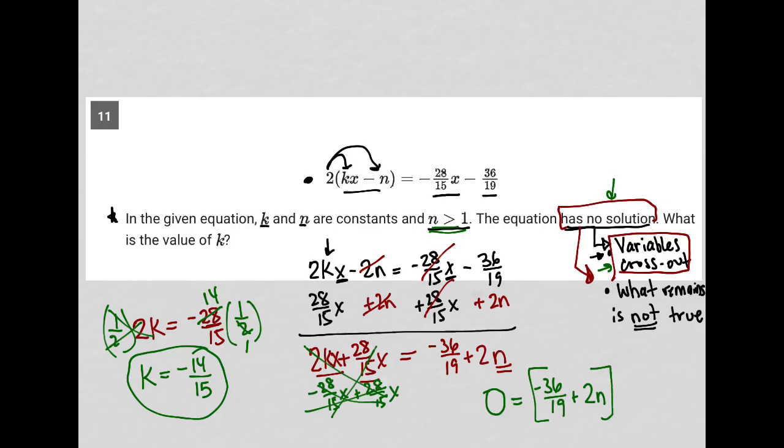And the fact that n has to be greater than 1 will automatically make sure that this doesn't cross out and it's some value that obviously does not equal zero. So this will not be a true statement no matter what n is. No matter what n you plug in here that's greater than 1 it will never be equal to zero. So that'll be the second part of this which says what remains is not true. So there's our answer, negative 14/15.